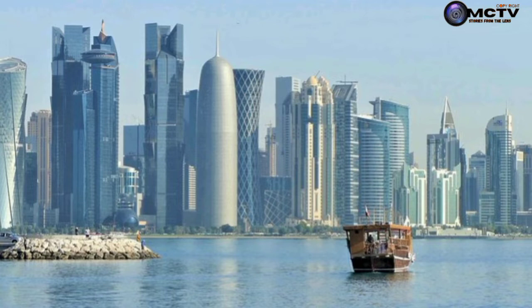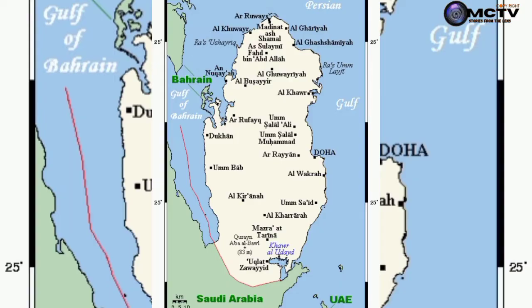Qatar is a peninsula in the east of the Arab world, bordering the Persian Gulf and Saudi Arabia. In a strategic location near the major mineral deposits, the state of Qatar occupies 11,471 square kilometers, which is an equivalent of 4,416 square miles, on a peninsula that extends approximately 160 km north into the Persian Gulf of the Arabian Peninsula.